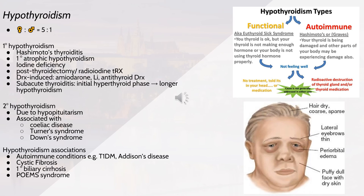Secondary hypothyroidism is due to hypopituitarism, associated with coeliac disease, Turner's or Down syndrome. Other associations include autoimmune conditions such as type 1 diabetes, cystic fibrosis, primary biliary cirrhosis, and POEMS syndrome — which consists of polyneuropathy, organomegaly, endocrinopathy, M protein bands and skin pigmentation or tethering.